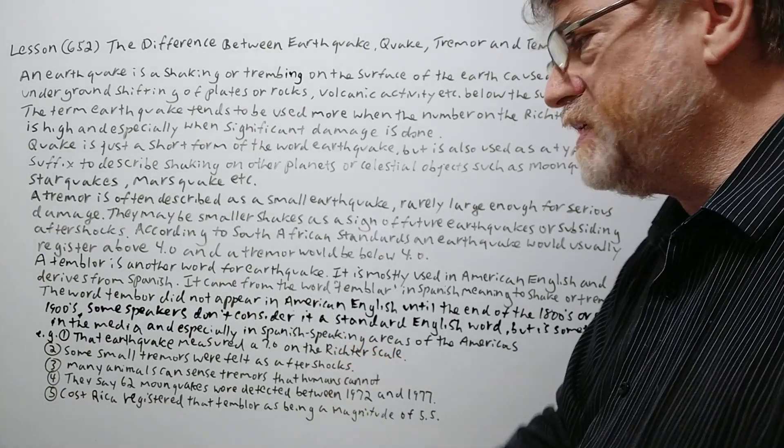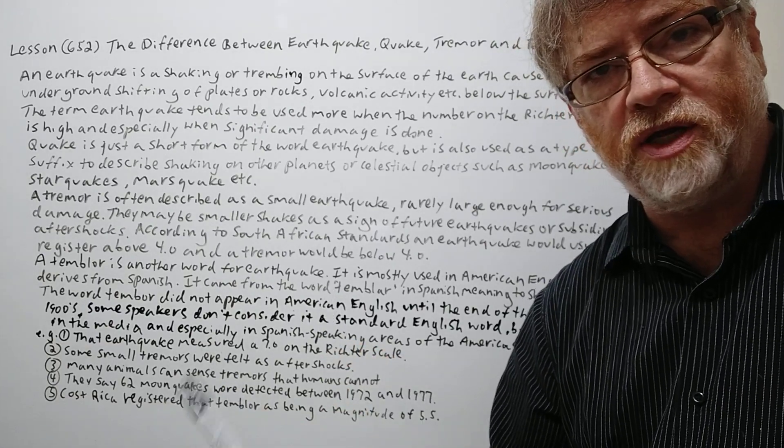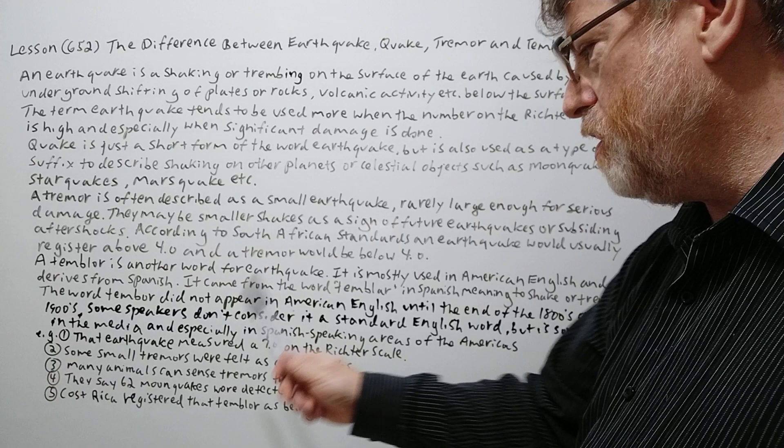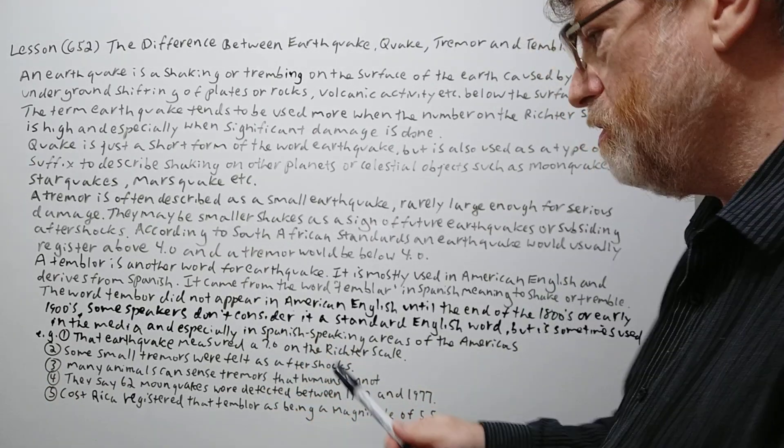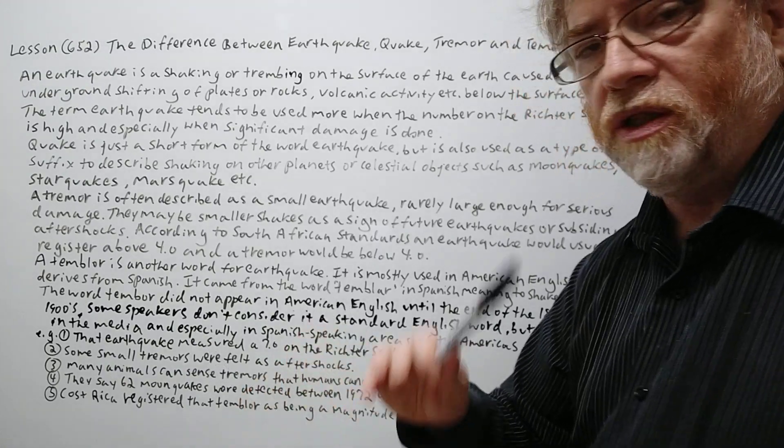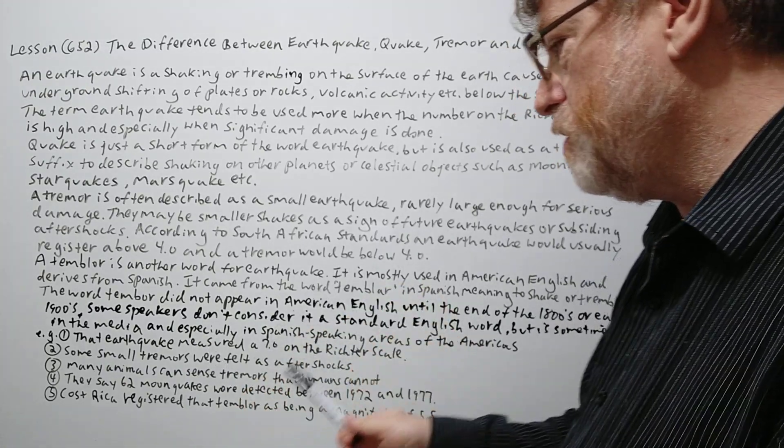And we got five examples here to show just how they are used. The earthquake measured a 7.0 on the Richter scale. Okay. General one. Again it's large so we're more likely to use the word earthquake.